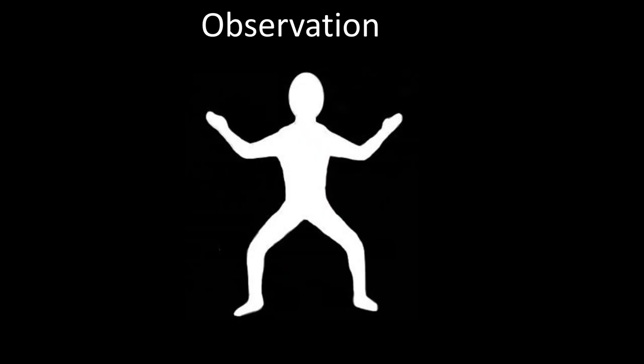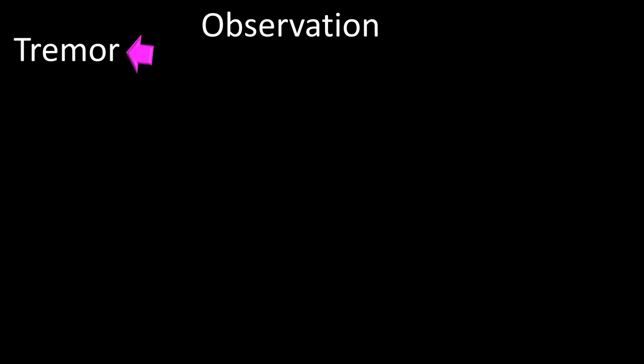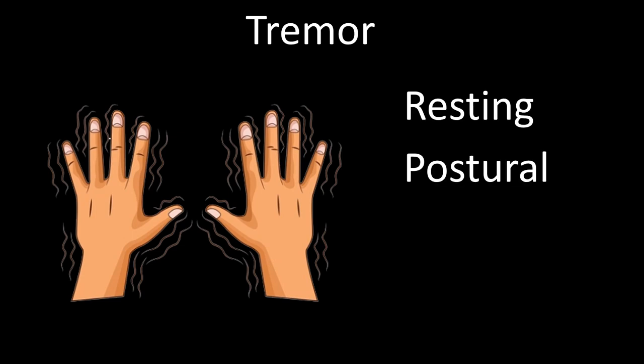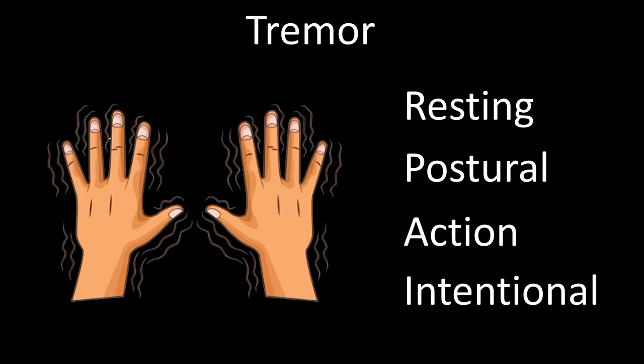Observation of the body is also important. We should look for fasciculations, but also for nine other conditions which we will review one by one. Starting with tremor — tremor is defined as an involuntary rhythmical alternating movement. It is convenient to classify tremor according to the state during which it occurs: resting, postural, action, and intentional.